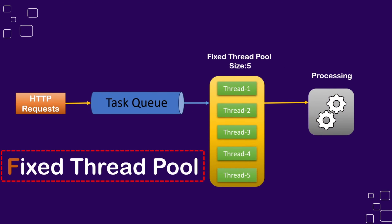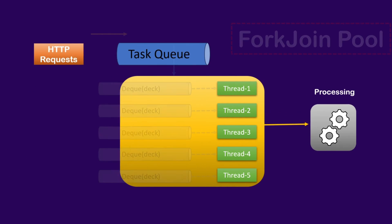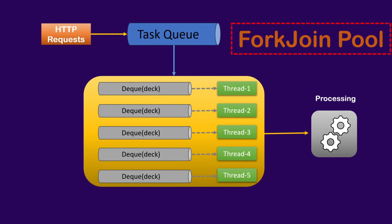In a standard fixed thread pool, threads pick tasks from a common queue and execute them. Once the execution of a particular task is complete, the thread remains idle in the pool until a new task is assigned. The major difference in fork join pool is that every thread has its own separate deque — a double-ended queue — where divided tasks are placed.